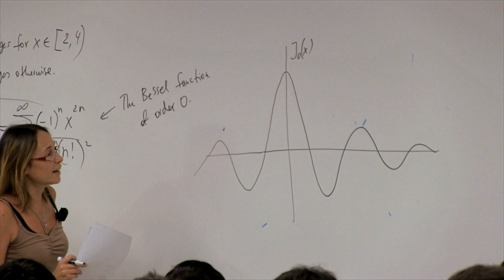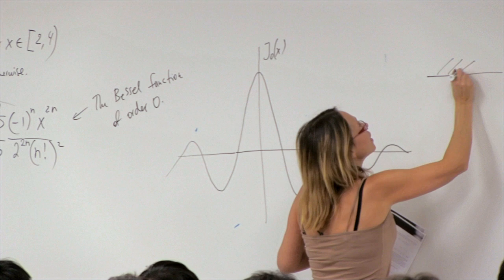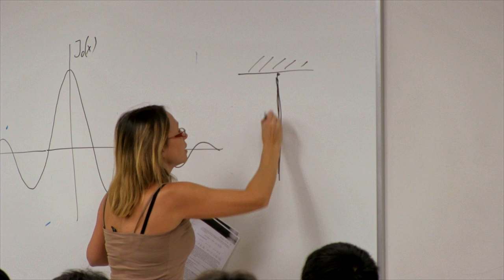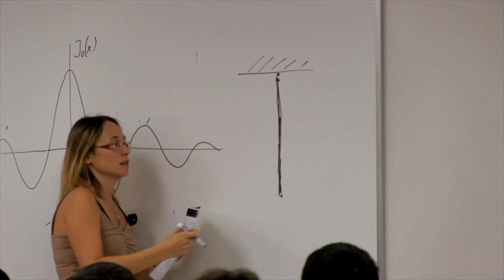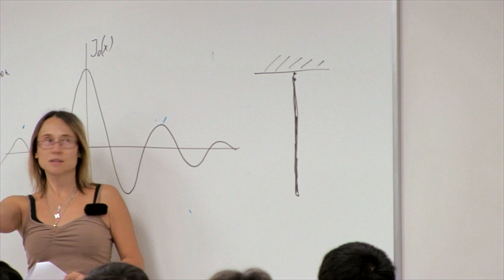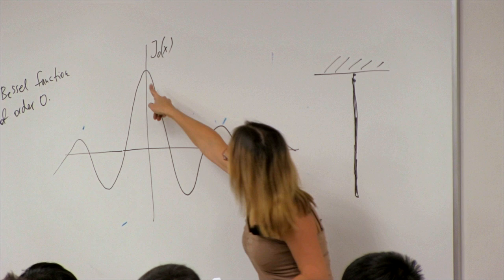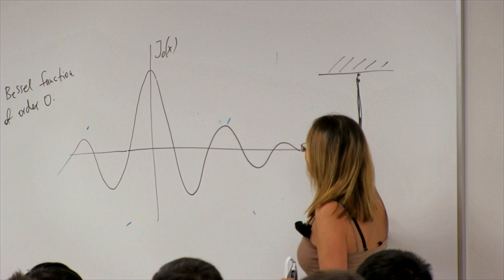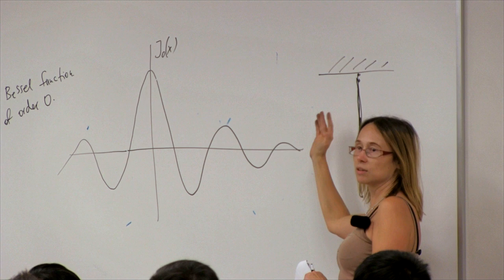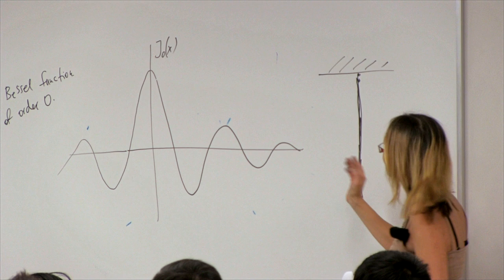The Bessel function is very important. To visualize it, imagine a rope hanging from the ceiling — a massive, heavy, long rope. If you push it, it starts oscillating. Lying on your side and taking a piece of this function — from here to here — gives exactly the shape that the rope outlines as it dances around. You can prove this by solving the equation describing the hanging rope.